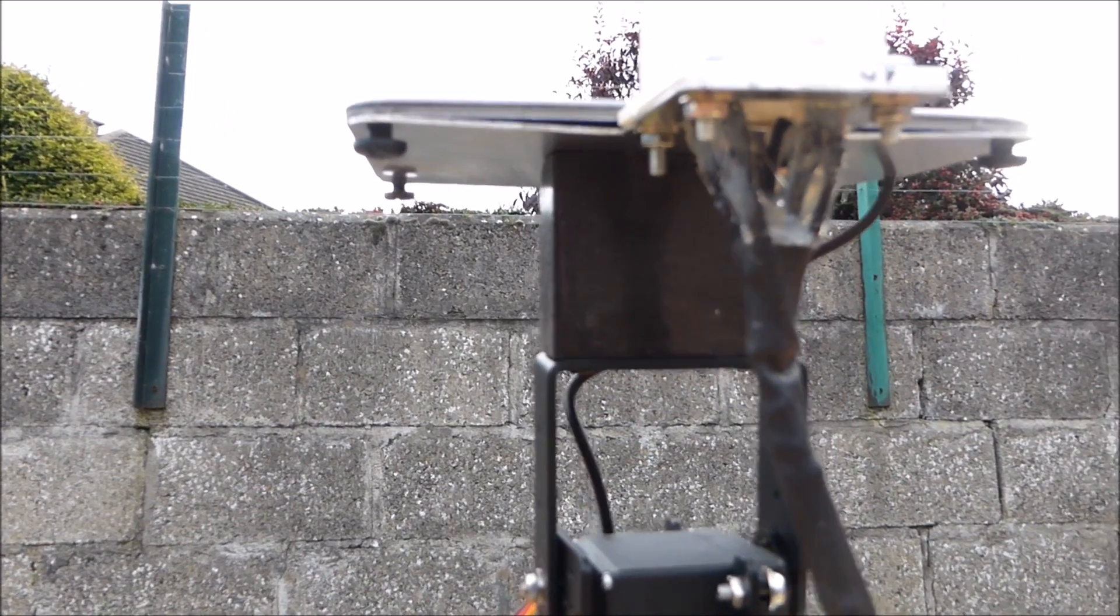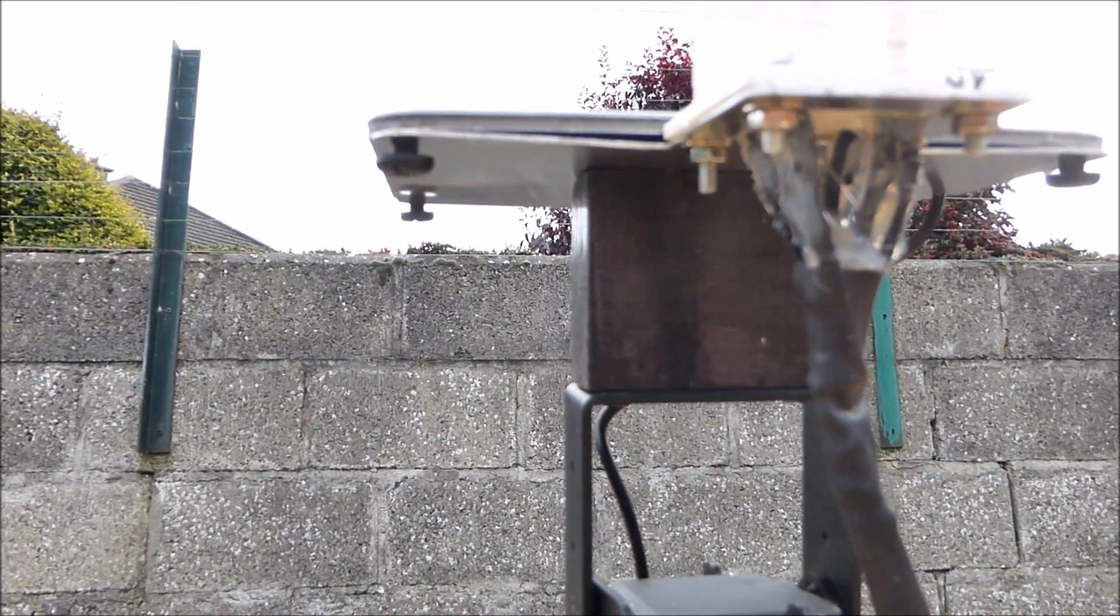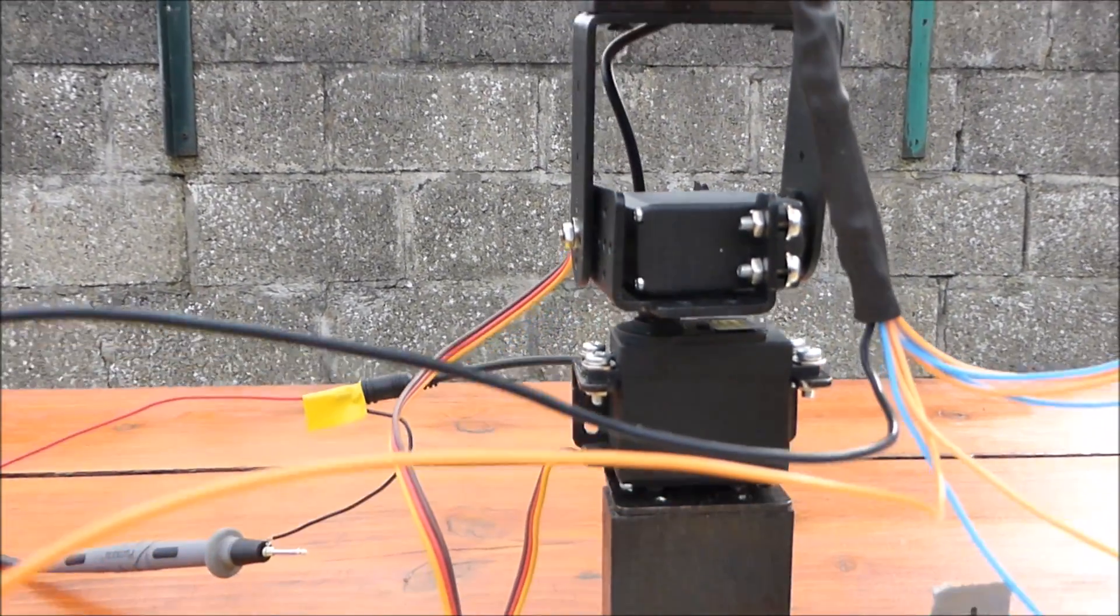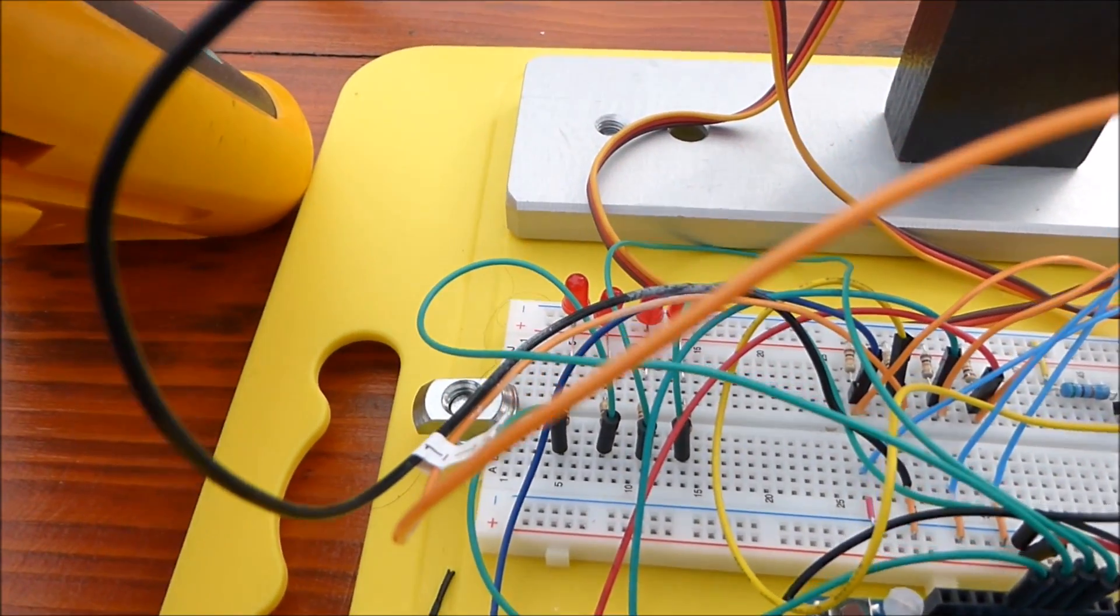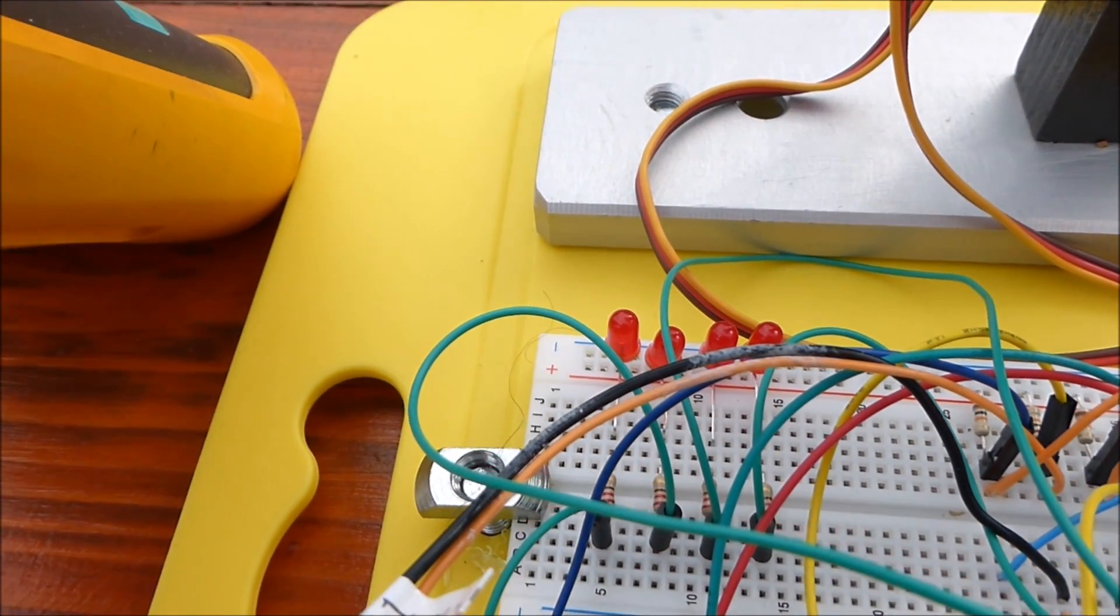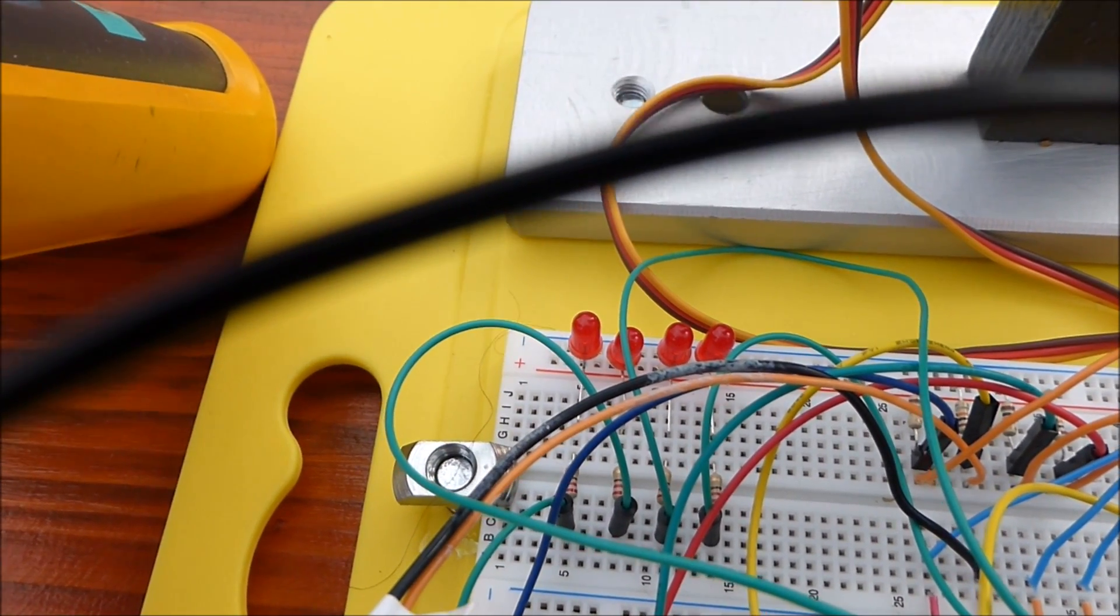Here we can see the underneath of the light-dependent resistors. These then feed into the microcontroller. On the board we also have four LEDs that allow us to see which of the sensors is active at a certain time.